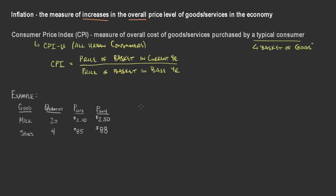Let's go ahead and do this in two different ways. The first way we're going to do this is for the 2013 basket. We've got 2013 prices and 2014 prices, so let's calculate the 2013 basket. For milk, it's going to be price times quantity: 20 units times $2.10 per unit, and 20 times 2.10 is equal to $42.